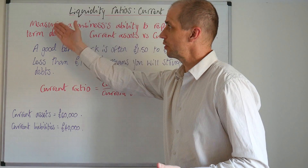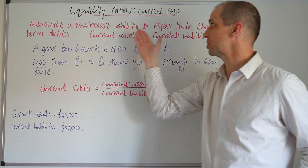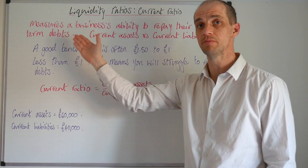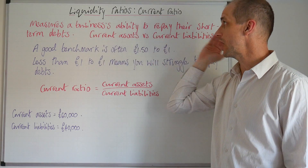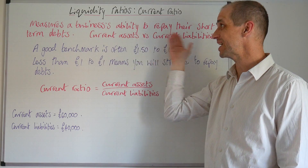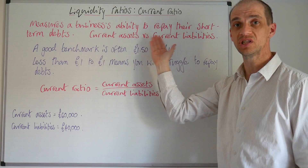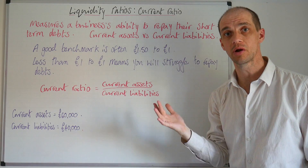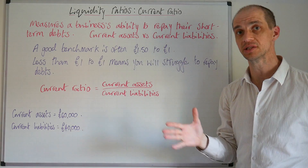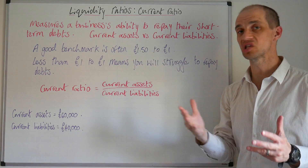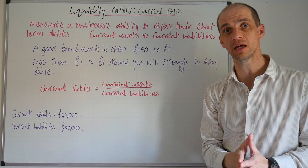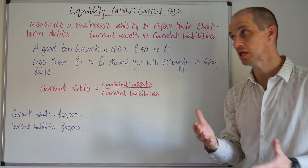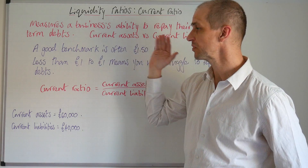The current ratio measures a business's ability to repay their short-term debts. Current assets are considered with regard to the actual position of the current liabilities. But this is a less severe test of liquidity than the acid test ratio.